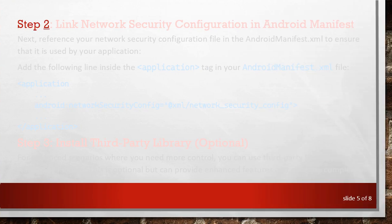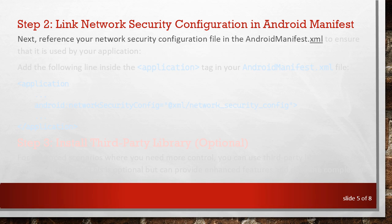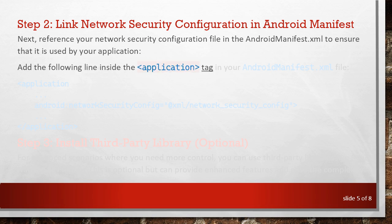Step 2: Link Network Security Configuration in Android Manifest. Next, reference your network security configuration file in the AndroidManifest.xml to ensure that it is used by your application. Add the following line inside the application tag in your AndroidManifest.xml file.